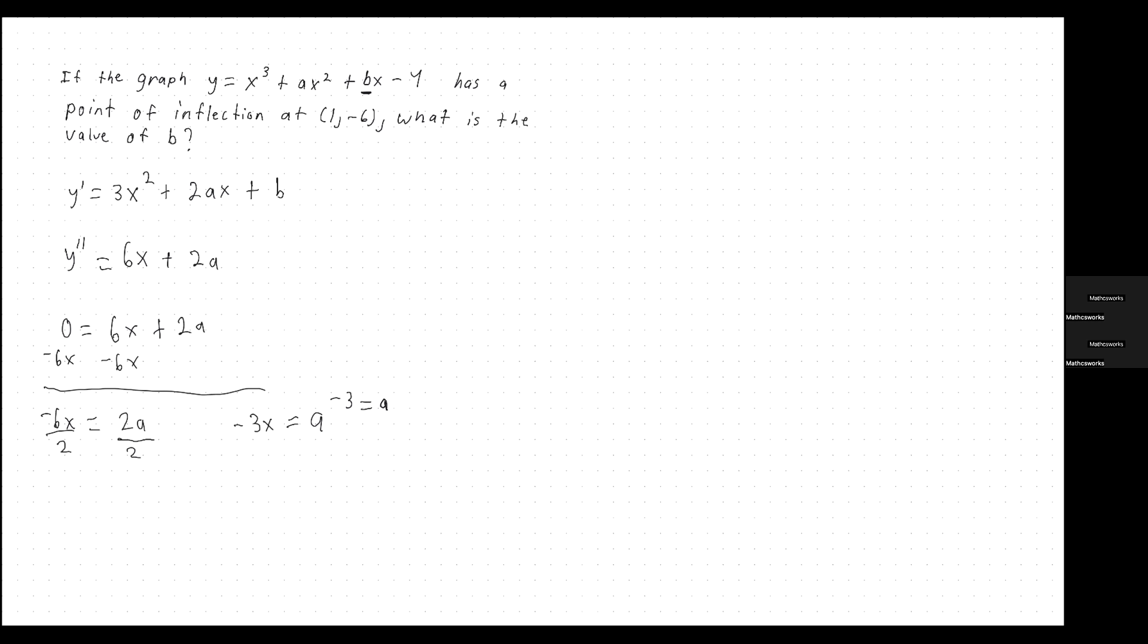So we got negative 6 is equal to 1 cubed plus negative 3 times 1 squared plus b times 1 minus 4. So the reason why we get 1 cubed is because we plugged in the 1 from the point of inflection, the x value, and we plugged in for the y value, the negative 6 that we're given.